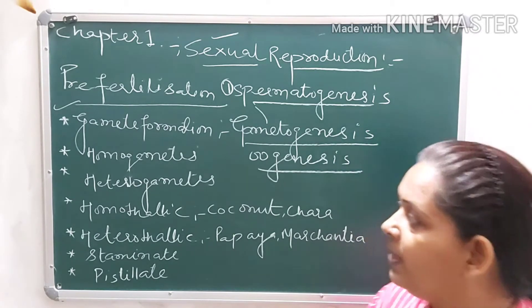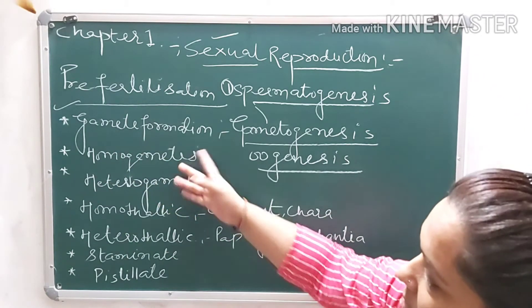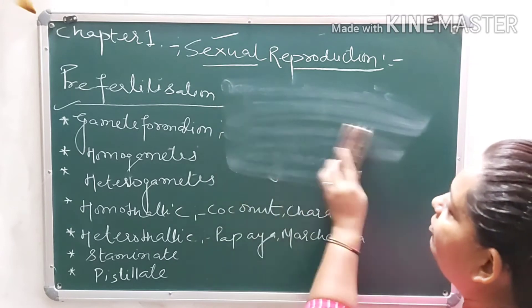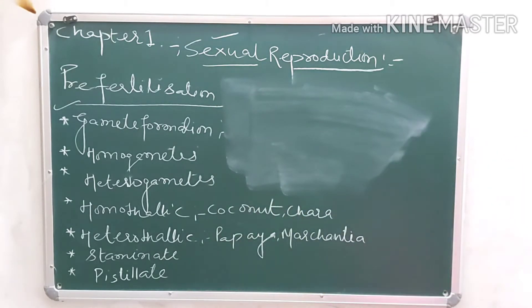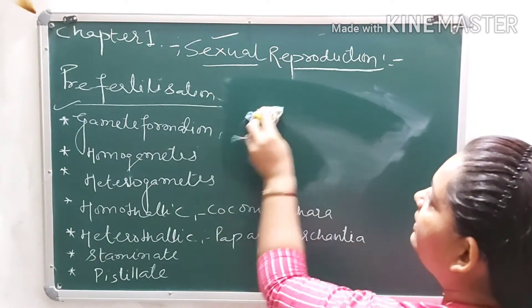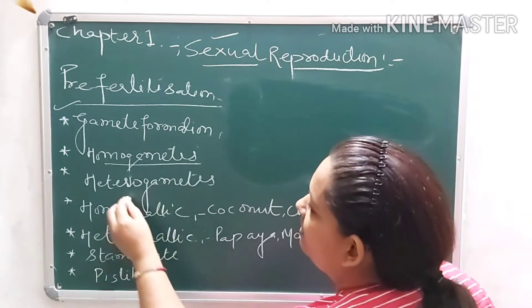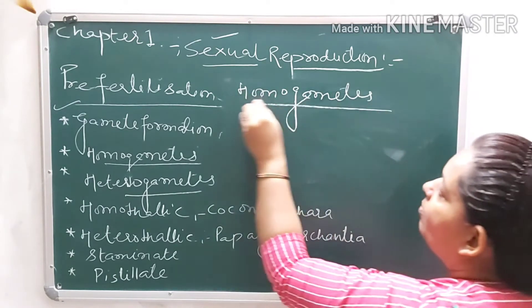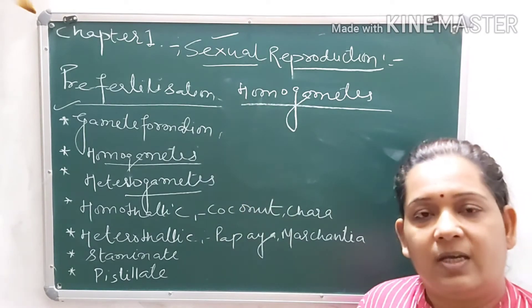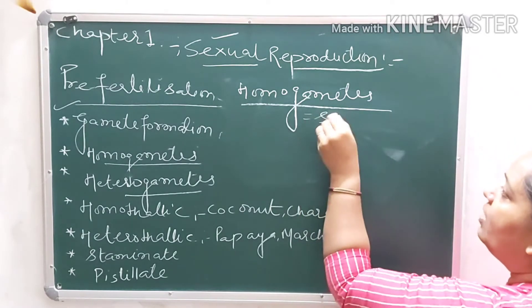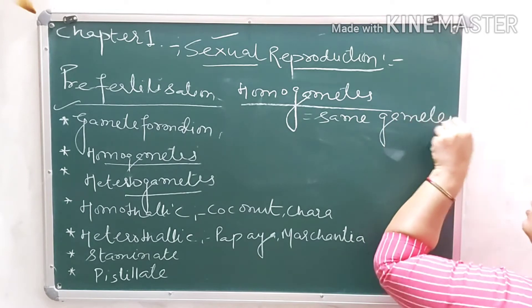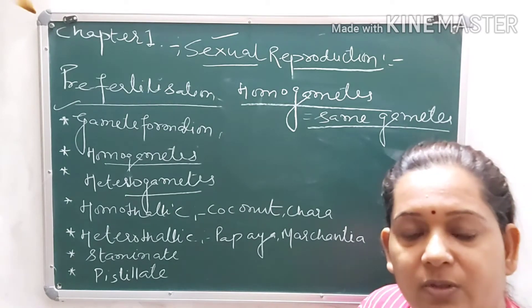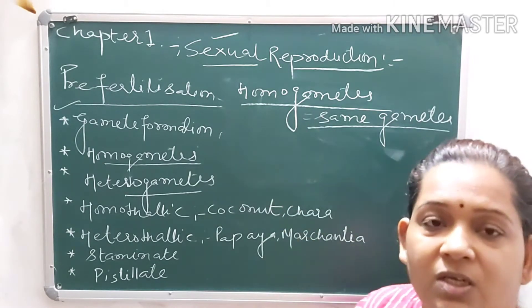Now we move to next point, homogametes and heterogametes. First homogametes. Homogametes means both gametes that form are exactly the same. Formation of same gametes, both have similar morphology. You cannot differentiate which is male or female. This type of gametes we call homogametes.